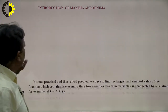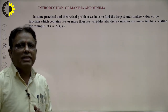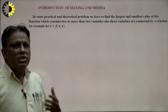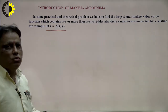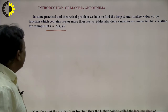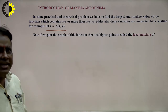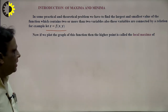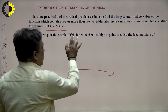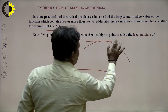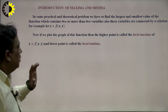Now, the question is: what is the role of two variables? In some practical and theoretical problems, we need to find the largest and smallest value of a function which contains two or more independent variables. Say z = f(x, y). How do we calculate the maxima and minimum value? If we plot the graph of this function, the highest point is called the local maxima and the lowest point the local minima.